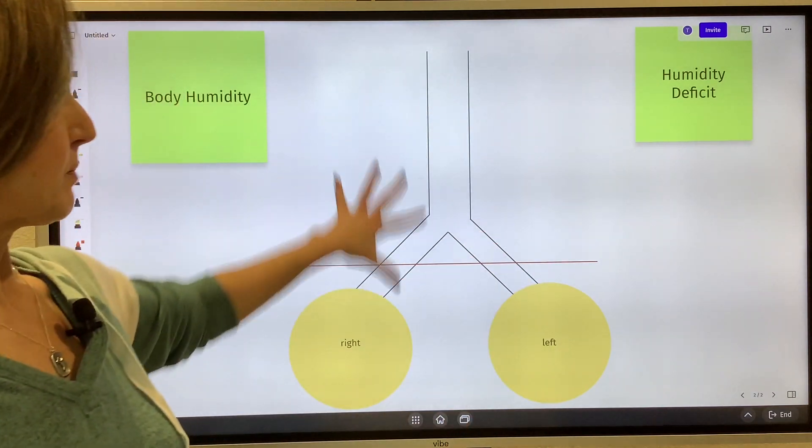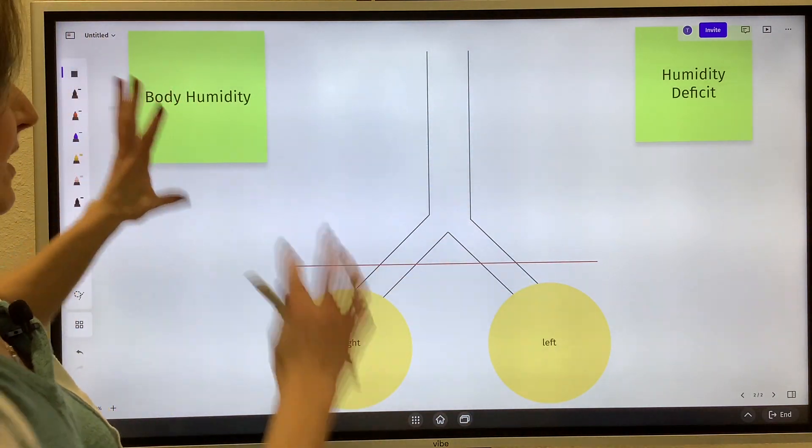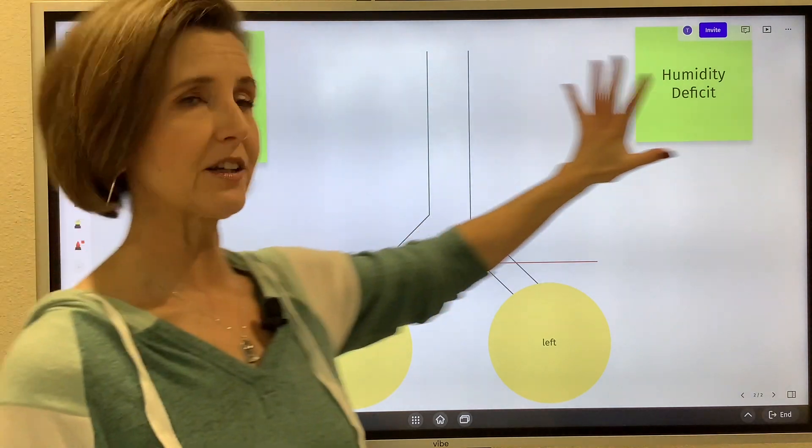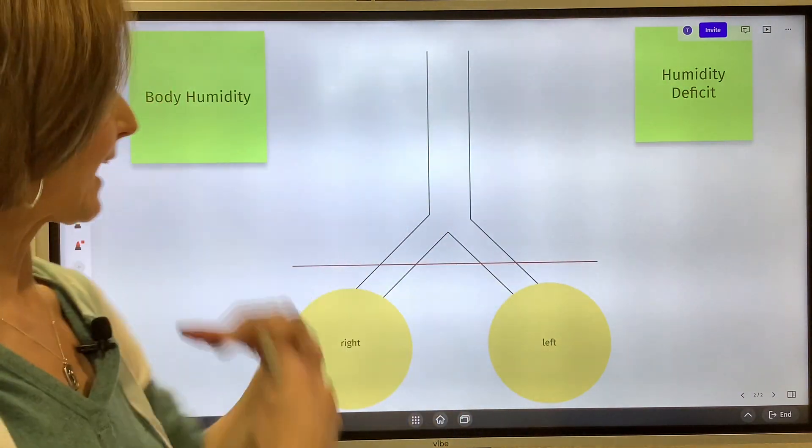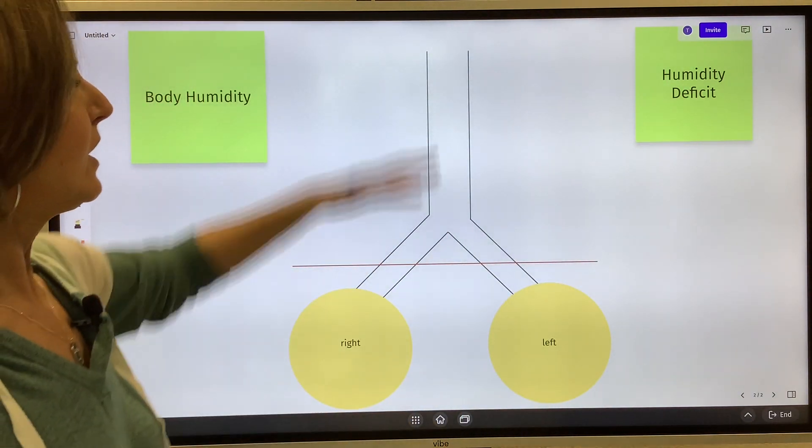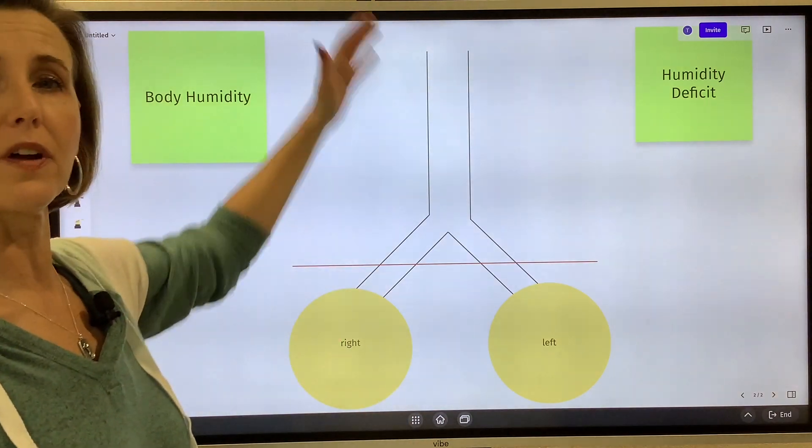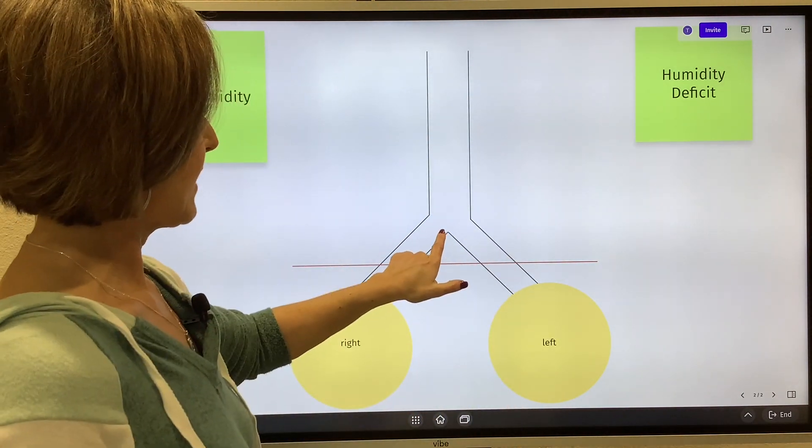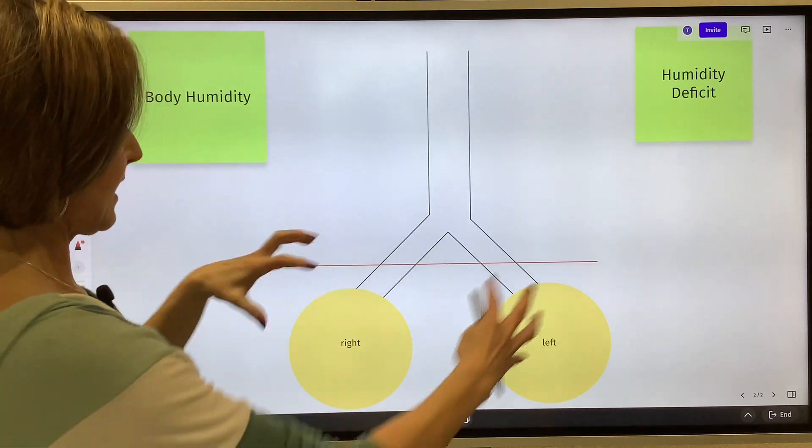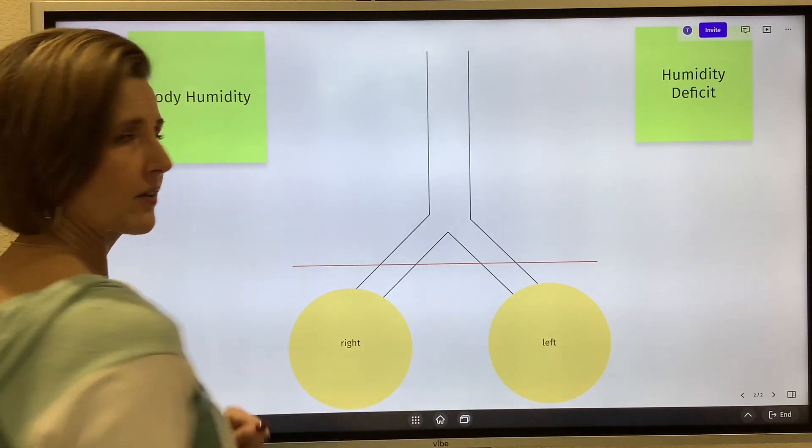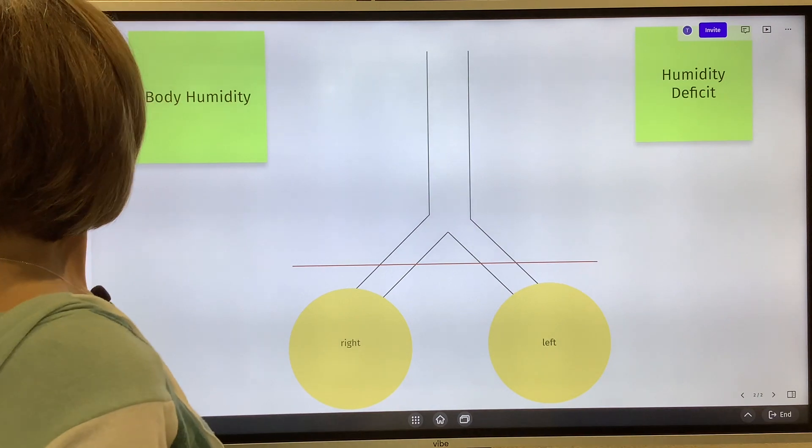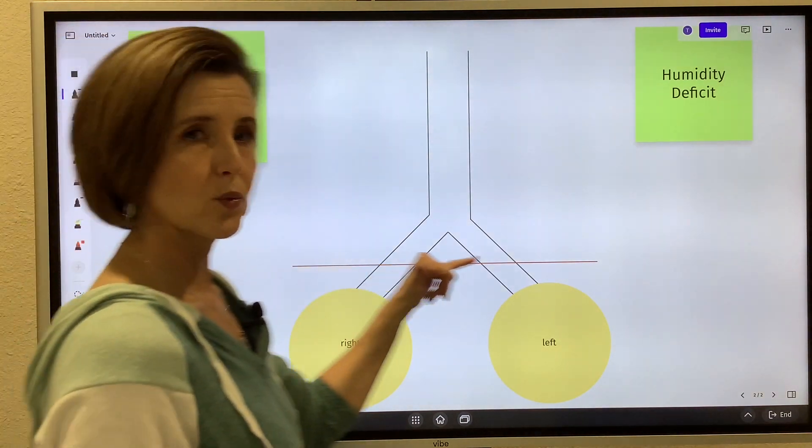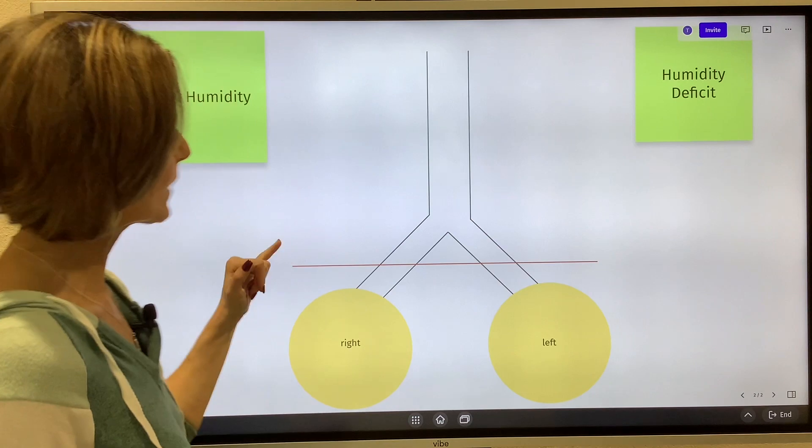I've got a very simplistic drawing here with the board divided into body humidity on this side and humidity deficit. Let me get you acclimated to what we've got going on. This is a simplistic view of the lung - this is our trachea, main stem bronchi, there is the carina, and we branch down to the right and the left lung. Another thing you'll notice is right here we have this red line.